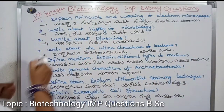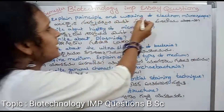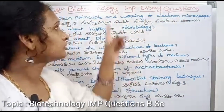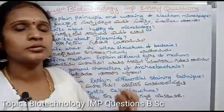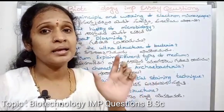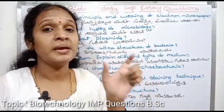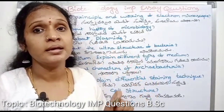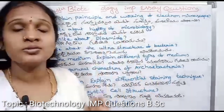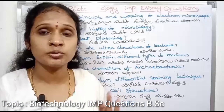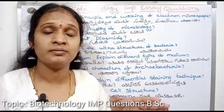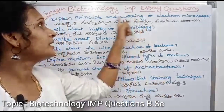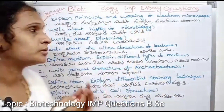First question: Explain the principle and working of the electron microscope. The principle and working of the electron microscope is done by Sotra.